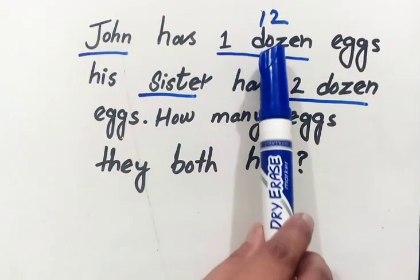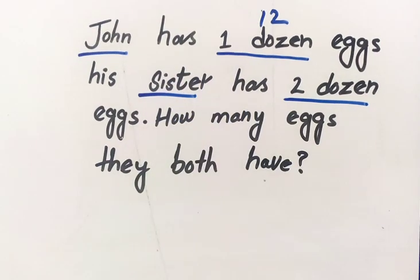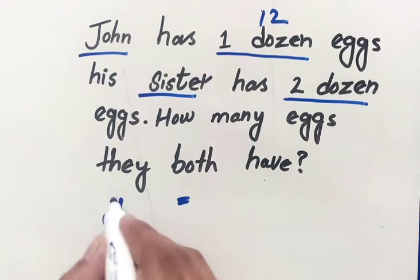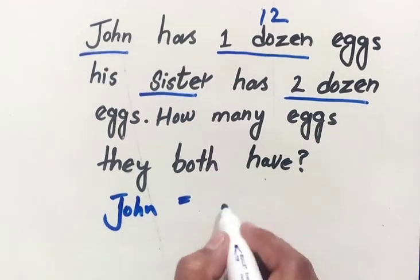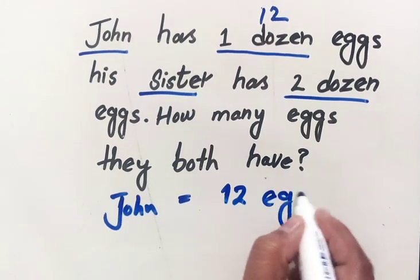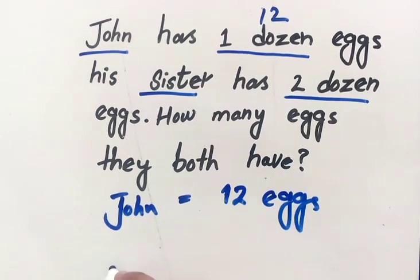Now as we know, one dozen has 12 eggs and two dozen has 24 eggs. Now 12 eggs of John are 12, John has 12 eggs and his sister has 24 eggs.